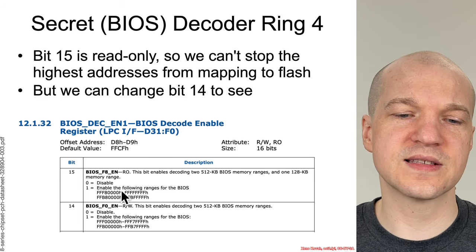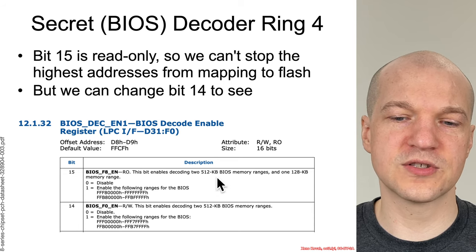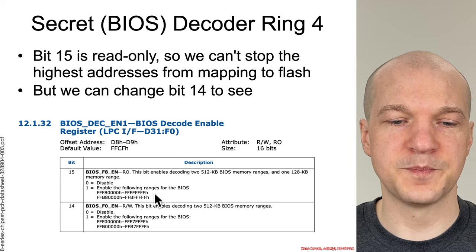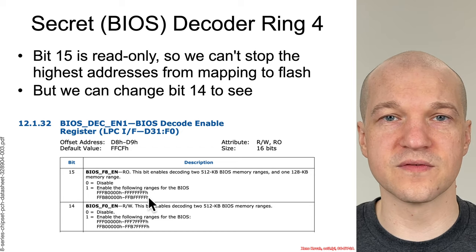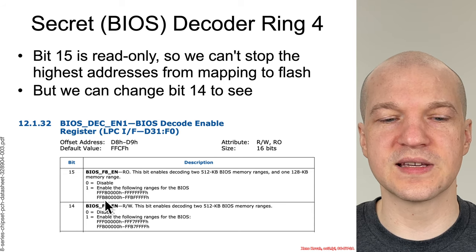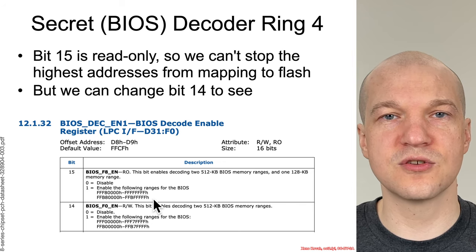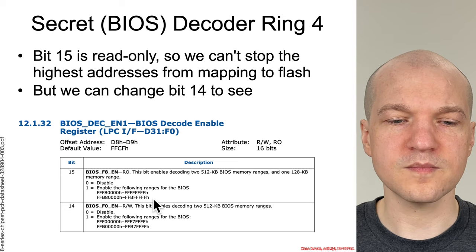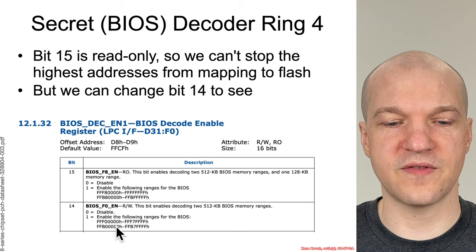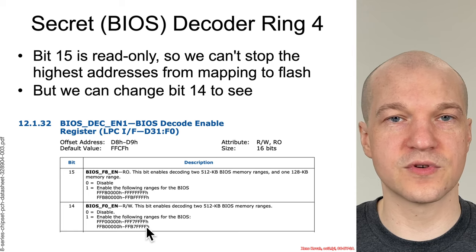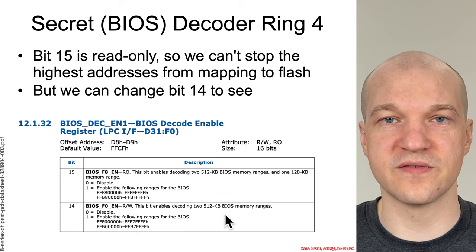So what exactly is interesting in this information? There's a bit 15 that controls decoding of a 512 kilobyte BIOS range — specifically the range from 0xFFF80000 all the way up to 0xFFFFFFFF, the end of the 4 gigabyte address space. When this is set to 1, it decodes physical addresses in that range into the end of the SPI flash chip. Similarly, bit 14, when set to 1, decodes the range from 0xFFF00000 up to 0xFFF7FFFF into the next 512KB block of the BIOS flash chip.